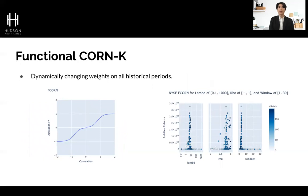The symmetric CORN algorithm provides an improvement from the original CORN, but there are methods to further improve it by placing different weights for each period. The activation function for SCORN was a piecewise function, and we can replace this with a smoother sigmoid function, making it possible to place different importance on correlated periods. One with higher correlation will have higher weight importance, whereas less correlated ones will have less importance. From the parameter tuning of functional CORN-K, the optimal rho value is much higher than in the previous CORN or SCORN — in the range of 0.8, representing high correlation. The left parameter, lambda, represents a scale factor dictating how smooth the activation function should be.